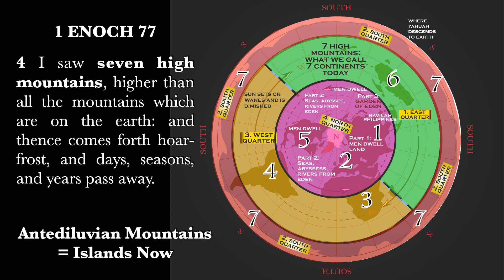Verse 4: 'And I saw seven high mountains, higher than all the mountains which are on the earth.' This is not talking about Mount Everest — this is talking about continents, which before the flood were mountains — mega mountains. Think about Australia as a mountain, with dry land all the way down to the ocean floor. Imagine Asia as a mountain. There was no world ocean yet. These are the seven continents of the earth, which Enoch knew even in his time, all surrounded by water now. Though it serves as the ring around the earth, Antarctica is still land and still a continent by definition. Enoch went there, so he knew this. And thence comes forth hoarfrost, and days, seasons, and years pass away.